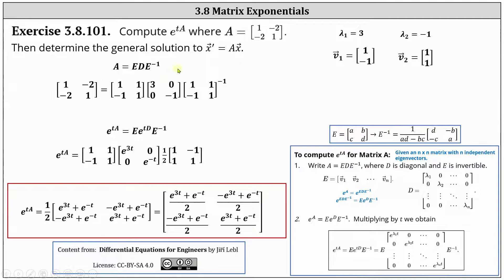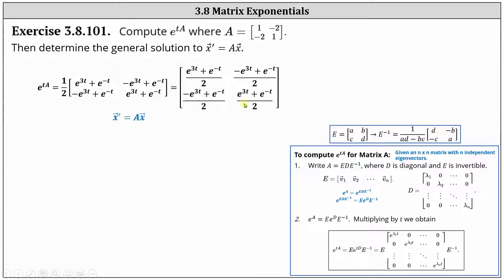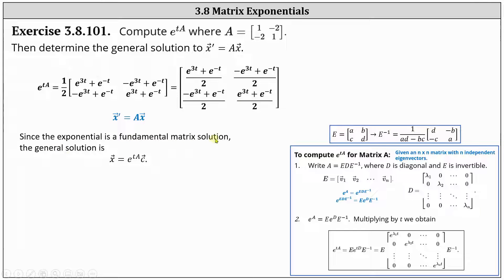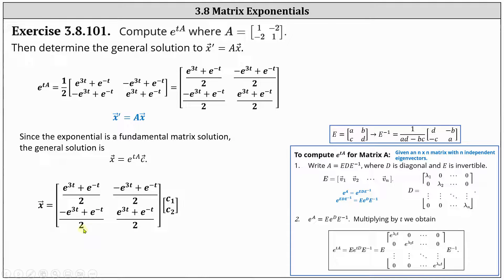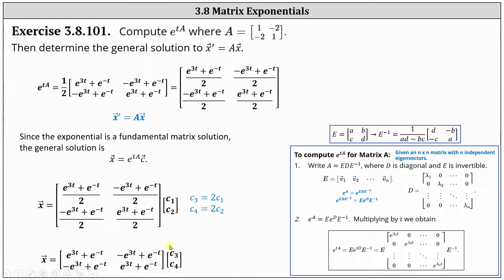Now we're asked to find the general solution to x prime equals A times x. Since the matrix exponential is a fundamental matrix solution, the general solution is x equals e to the power of tA times C, where C is a constant vector. This gives the general solution x equals the matrix exponential e to the power of tA times the constant vector with entries C one, C two. We could also eliminate the denominators of two by letting C three equal two C one and C four equal two C two, and write the general solution in that form instead. Either form would be correct.